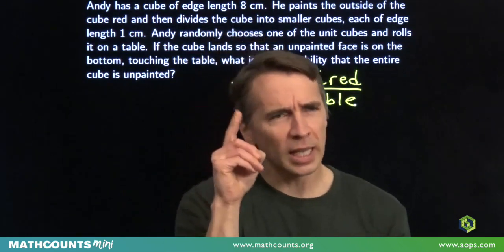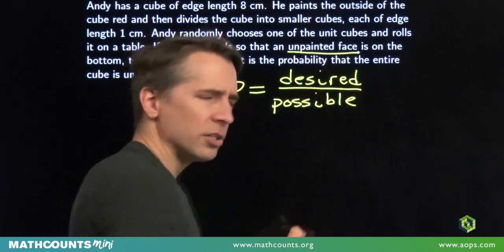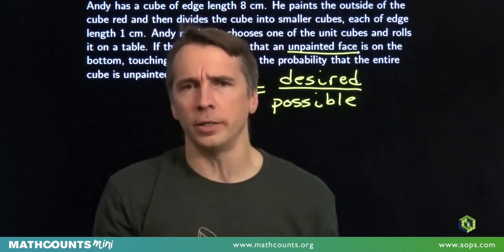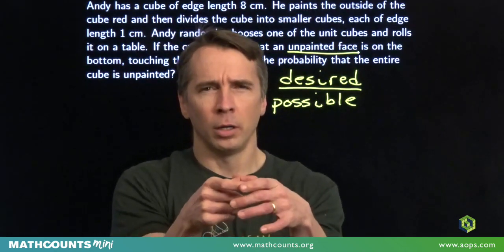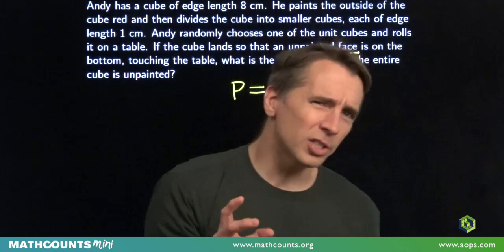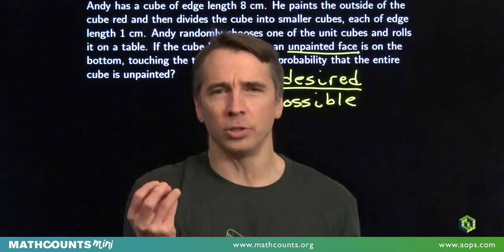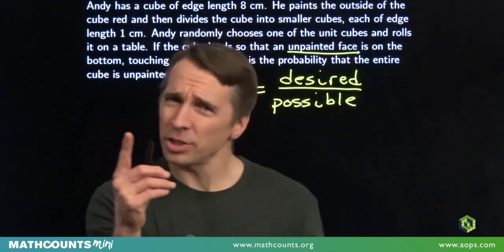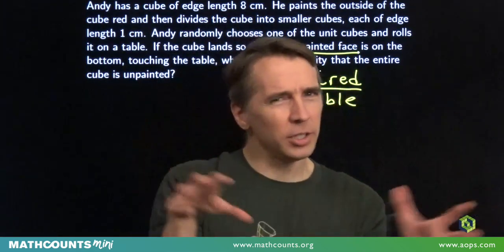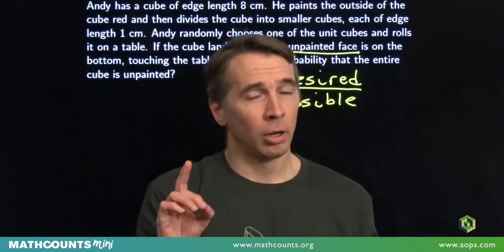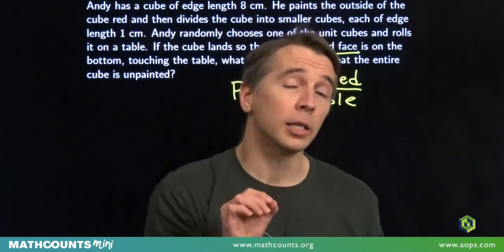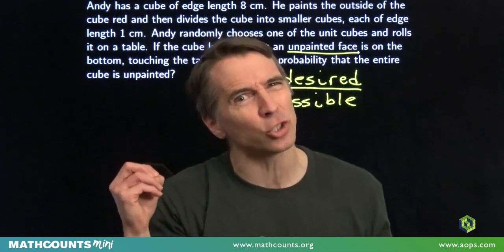And we get some more information. Imagine there's an unpainted face sitting there on the table. And that information tells us something about the cube that he actually chose. And it tells us that all these unit cubes we started with are no longer equally likely to have been the one that Andy actually chose.